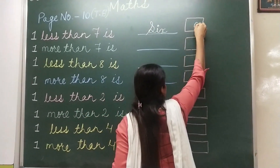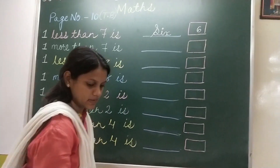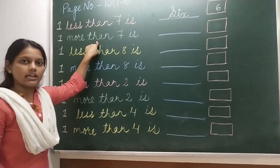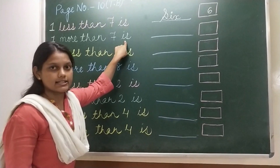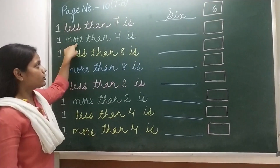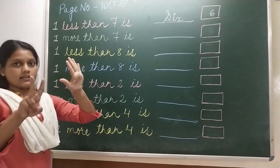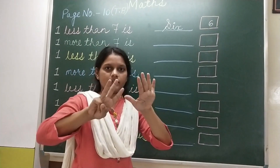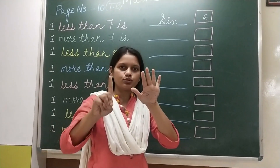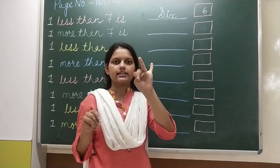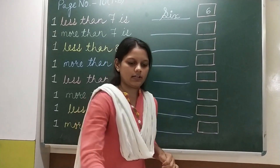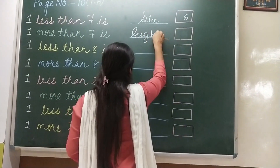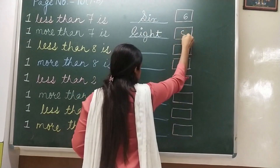Next: 1 more than 7. More means add 1. So 7 fingers and 1 more — how many fingers? 1, 2, 3, 4, 5, 6, 7, 8. 8 is already written in your textbook. 1 more than 7 is 8.